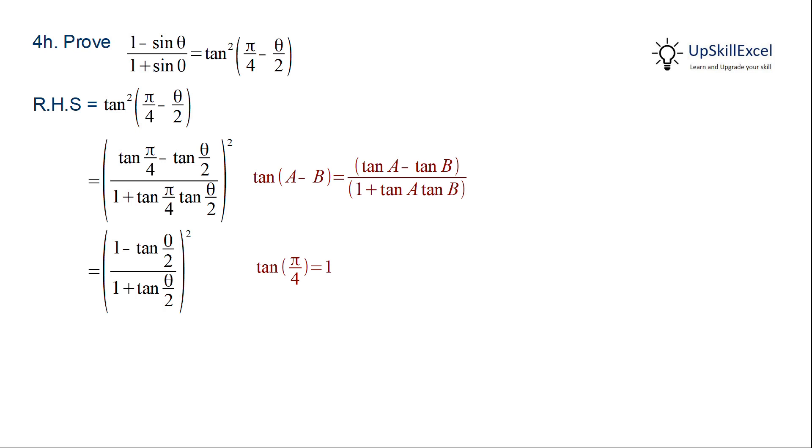Now within the square we can multiply both numerator and denominator by cos theta by 2. So that we get cos theta by 2 minus sin theta by 2 divided by cos theta by 2 plus sin theta by 2 whole square.